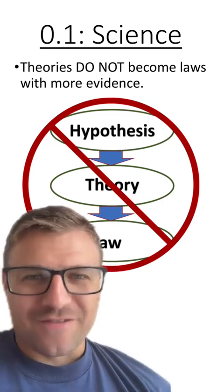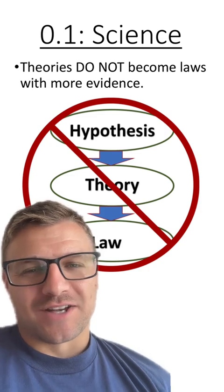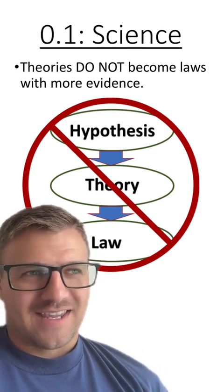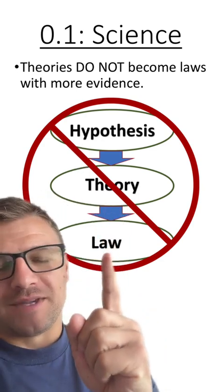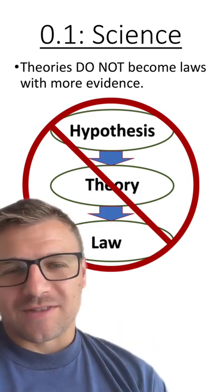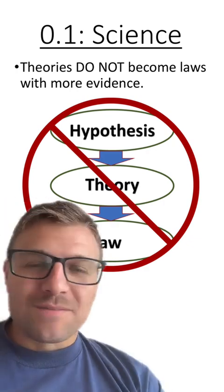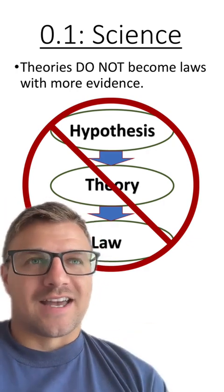If you don't take anything from this one section, I would take this. Theories do not become laws with more evidence. I think there's a, again, misunderstanding from society that we start out with hypotheses, we move to theories, and then we become a law. When it's not the case, theories and laws are two separate things. A theory will never become a law with more evidence because they describe two different sets of ideas.